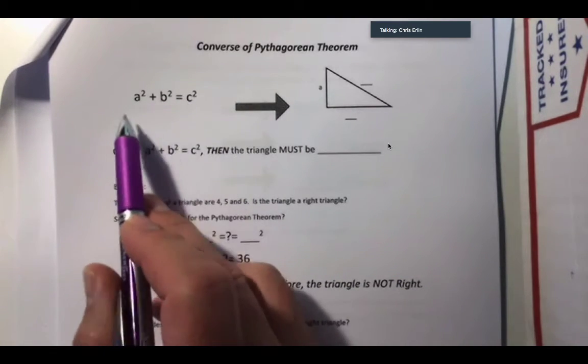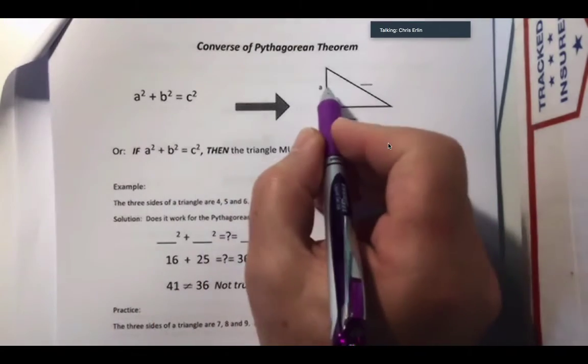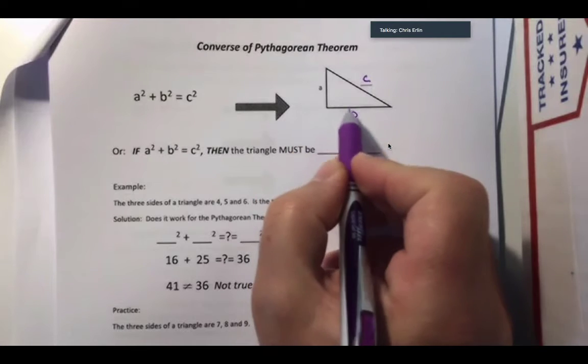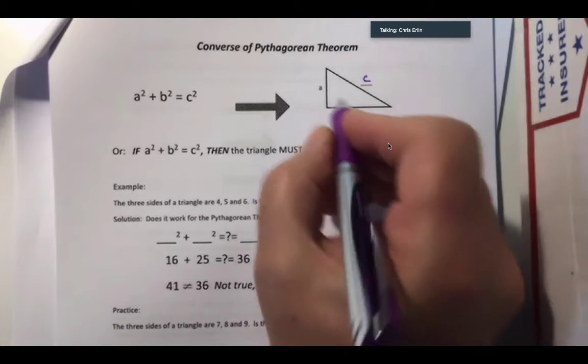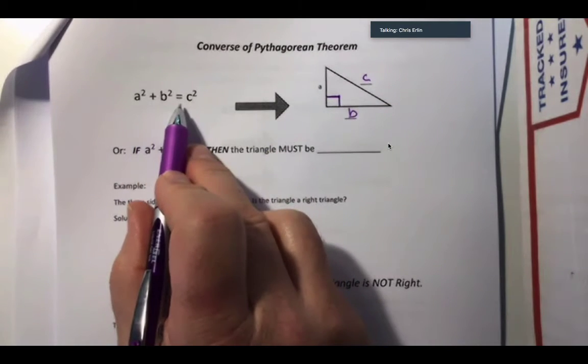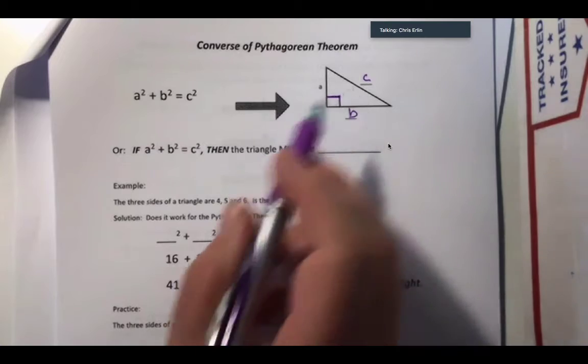In other words, if I know that a squared plus b squared equals c squared, then those sides can be represented as a, b, and c, where c is the hypotenuse, in a right triangle. In other words, if these numbers fit this scenario, then it must be a right triangle with c as the hypotenuse.